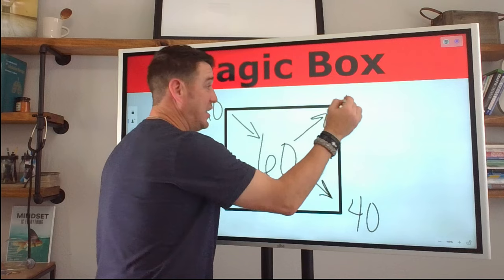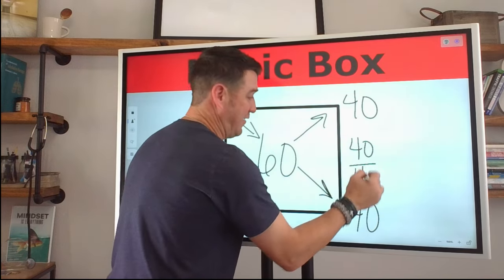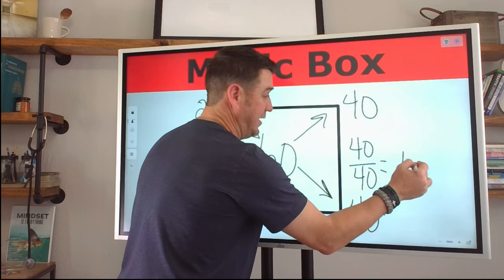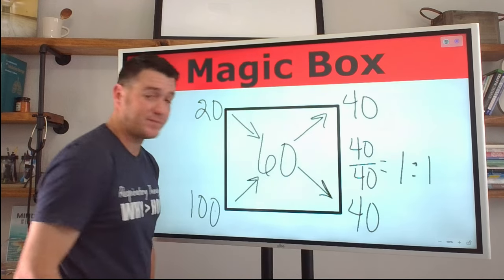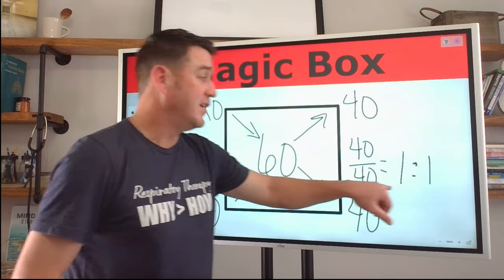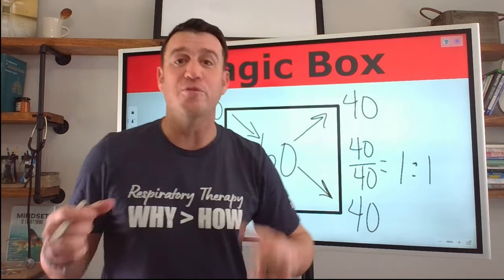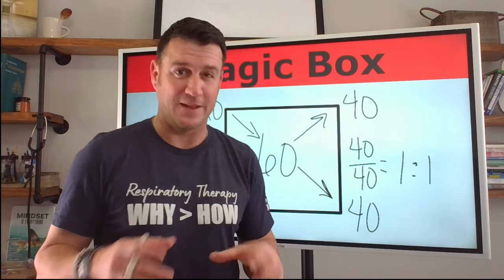100 minus 60 is 40. So now we just divide 40 divided by 40 equals one to one for every one part of oxygen that you're delivering. You're bringing in another liter of room air. And that's how that looks.